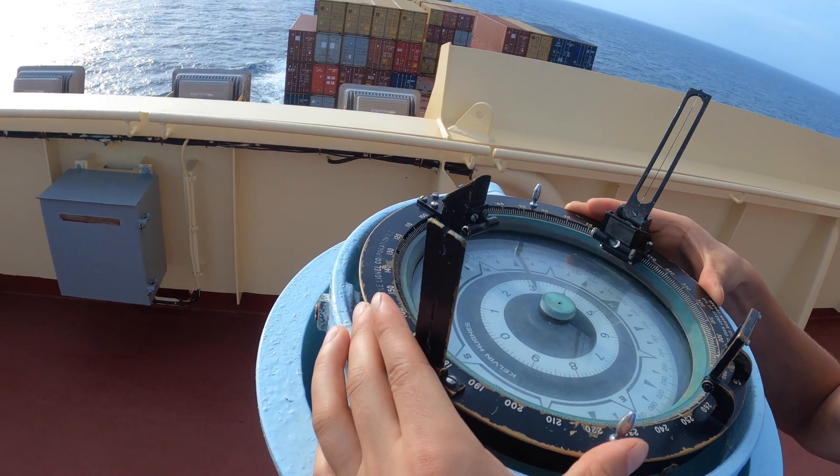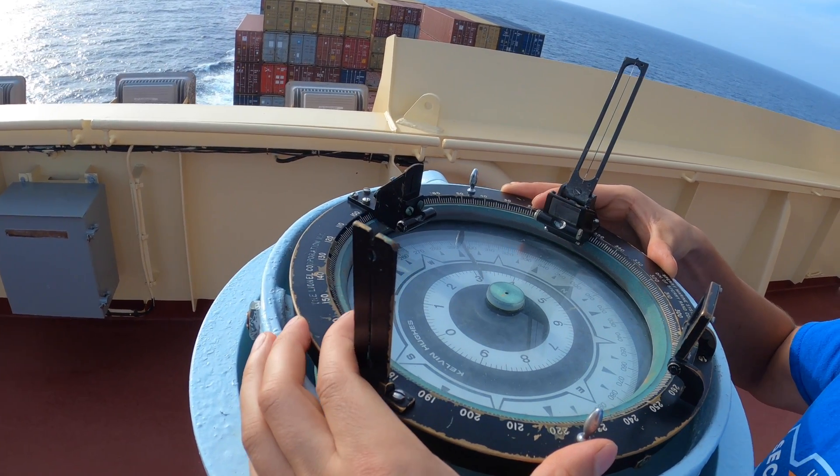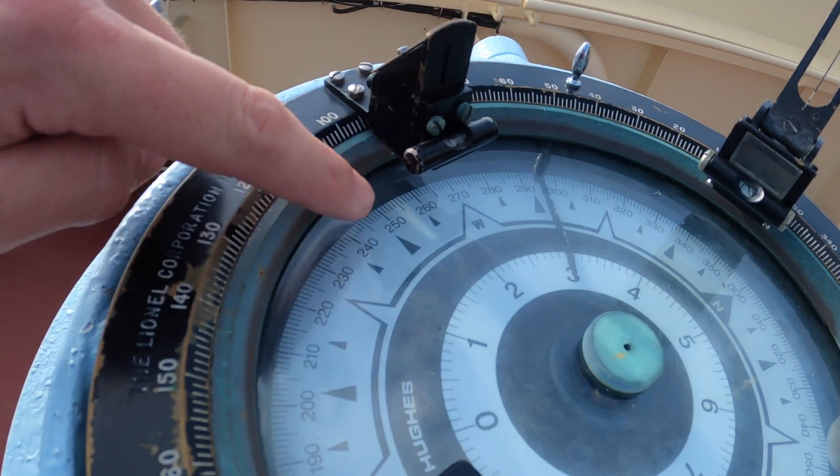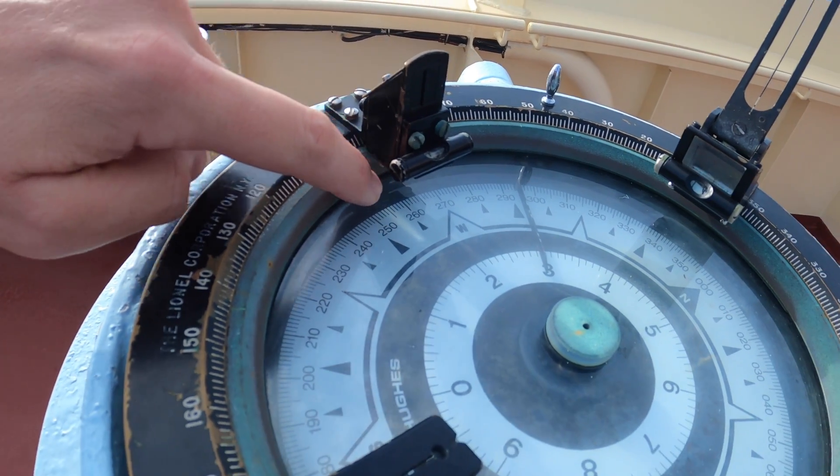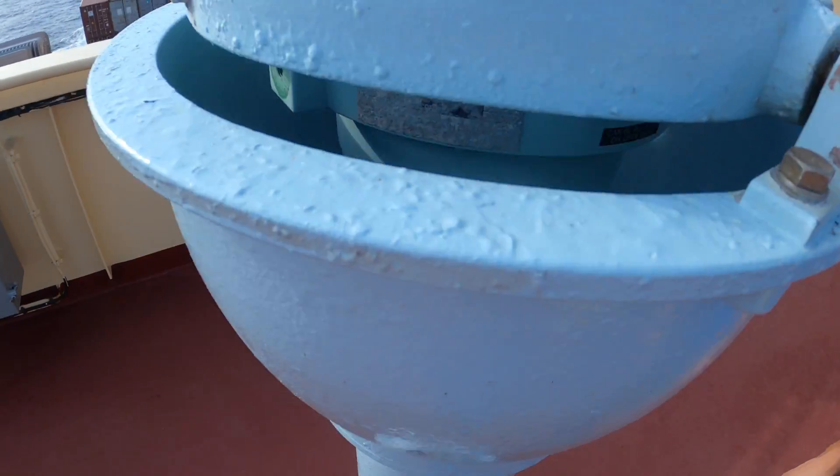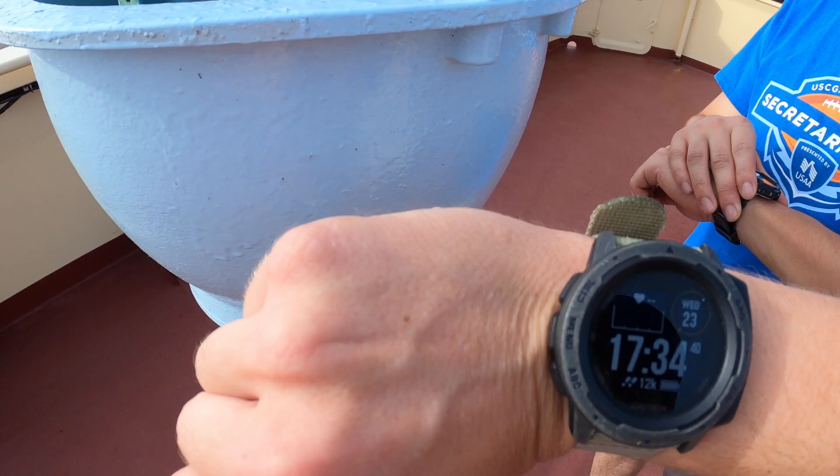It's a matter of making sure that the gyro compass is perfectly level using these side bubbles, and you can see the line lines right up with 255. So the azimuth of the sun is 255 and the time is 1734.